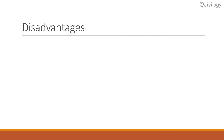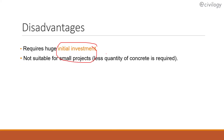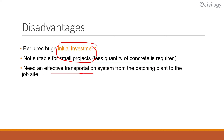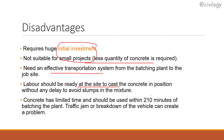What are the disadvantages? RMC requires huge initial investment — those looking to start the business need good capital. It is not suitable for small projects because only a small quantity of concrete is required. An effective transport system is needed from the batching plant to the job site. Labor should be ready at the site to cast the concrete without delay, as slump can form in the mixture. Additionally, concrete has a limited working time and should be used within 2–10 minutes of batching. Traffic jams or vehicle breakdowns can also create problems.